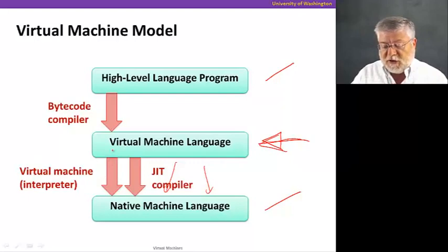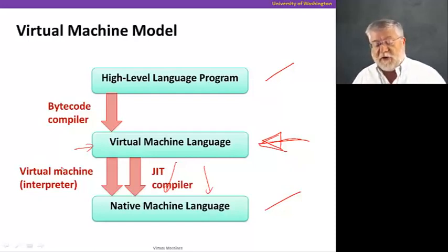The virtual machine interpreter is actually going to look at the virtual machine language instructions, the bytecodes, and for each one interpret it, decide what it has to do. The JIT compiler, on the other hand, will translate those instructions into the low-level native machine language.